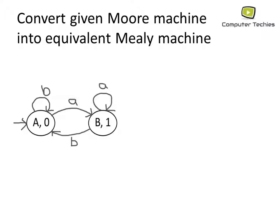Let's start with the example. Here we have to convert the given Moore machine into an equivalent Mealy machine. The machine consists of two states: A and B. State A has output 0 while state B has output 1. There are transitions on inputs a and b given, and A is the starting state.